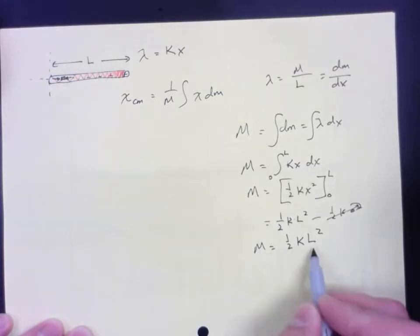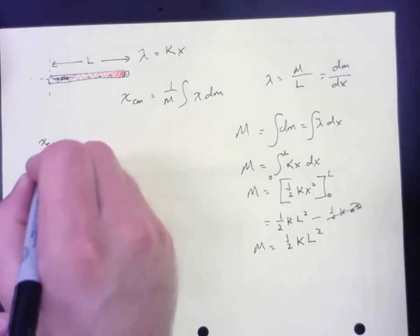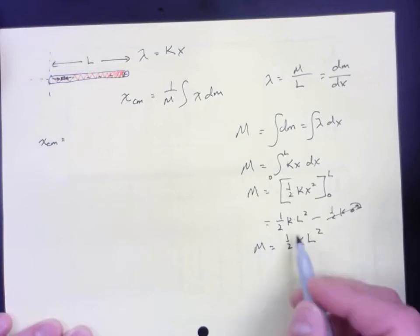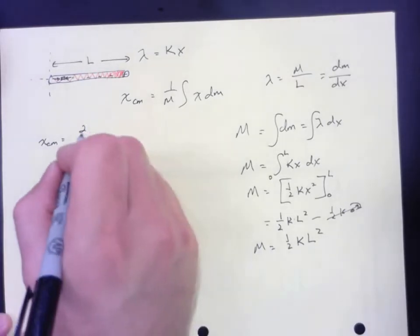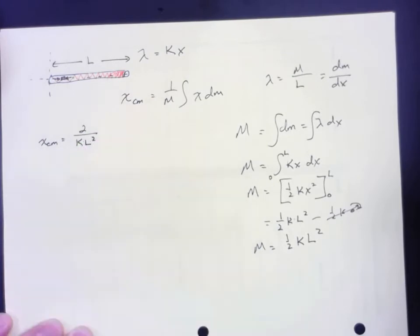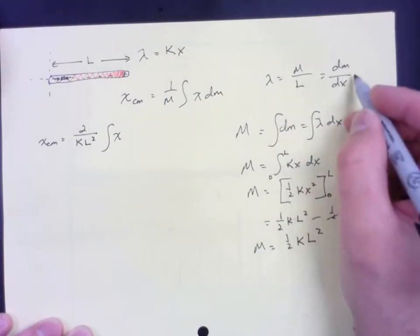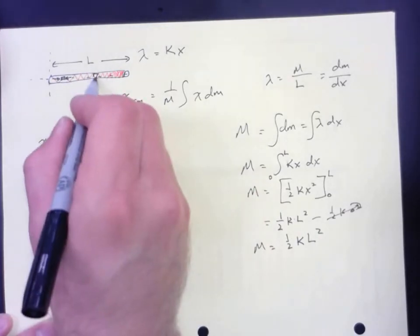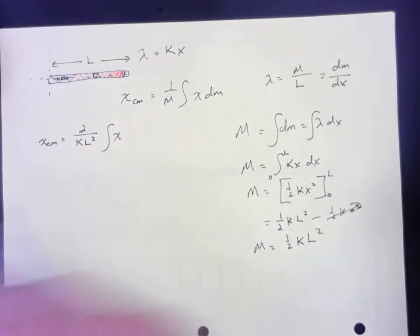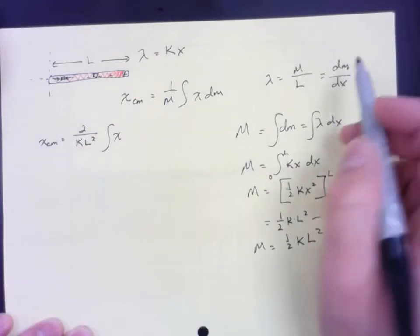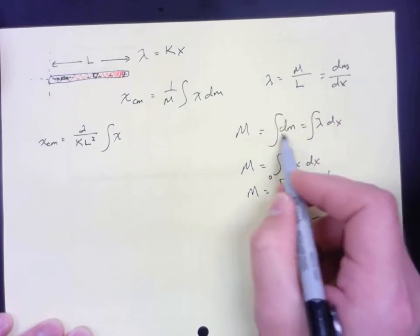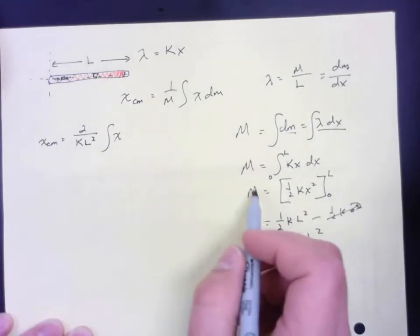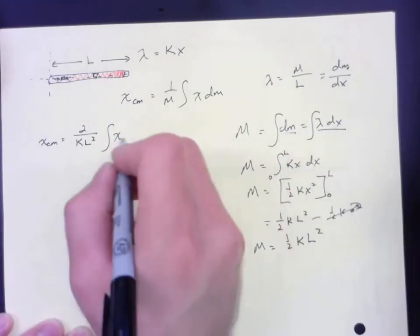So now that we know the total mass, we can actually make that substitution. So that the x_cm is equal to, if it's 1 over 1 half, that's going to be 2, over kL squared. And that's outside of the integral. And we have x, but we don't know the little mass, but we know that the little piece of mass value depends on the density at that location. So this little piece of mass depends on the density at this location. So we're going to use this same equation here, and substitute it in for dm. So instead of dm, I'm going to put in lambda dx.